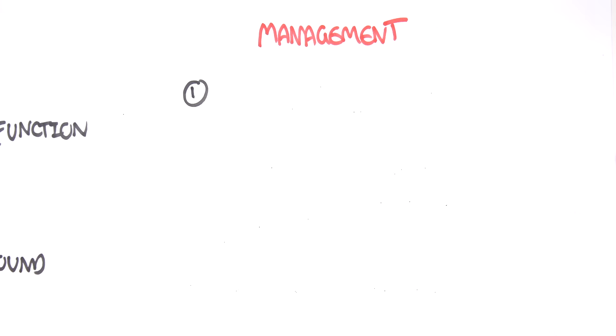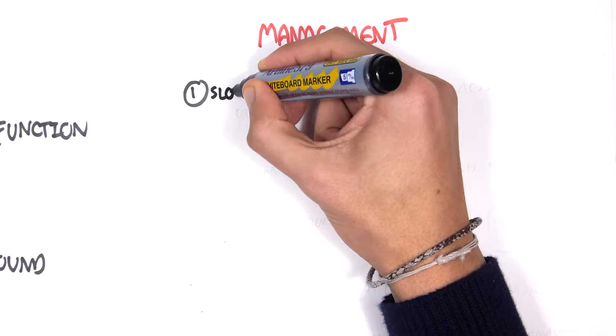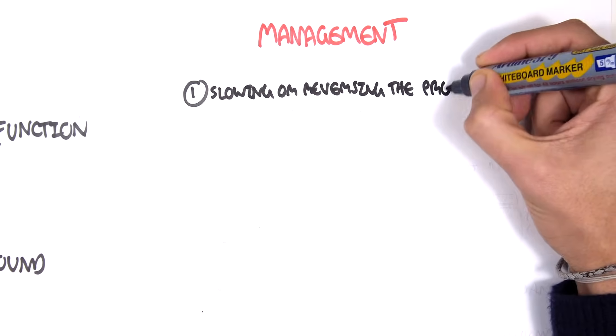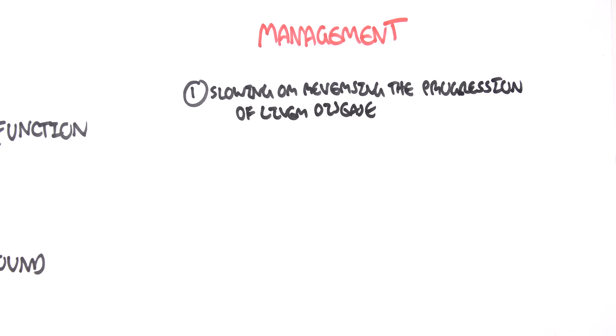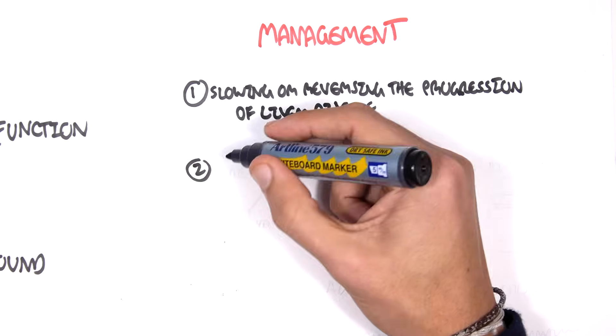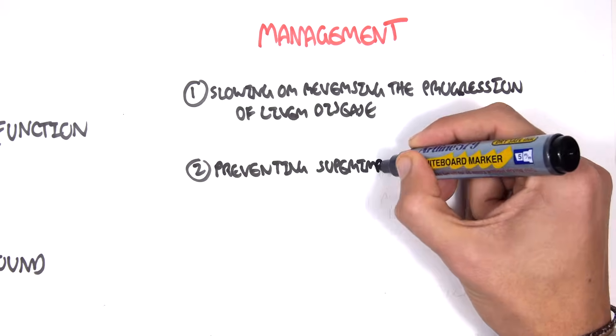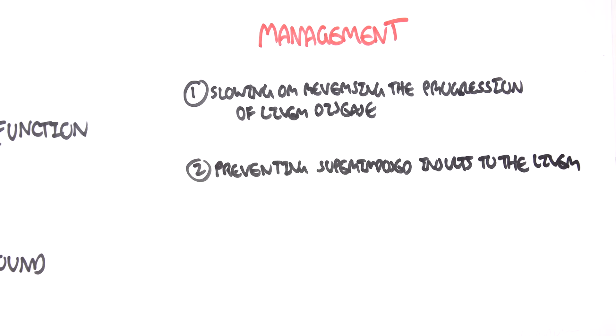Finally, let's look at the management for liver cirrhosis. The main thing to do is trying to slow or reverse the progression of liver disease. This leads to the second management, which is preventing the superimposed insults to the liver.